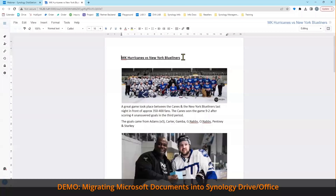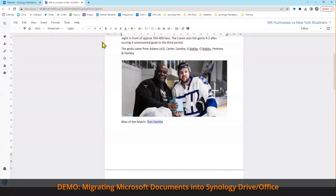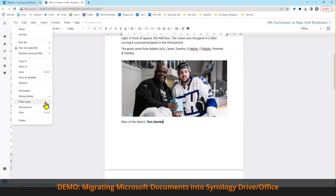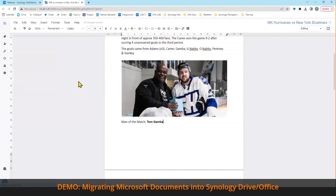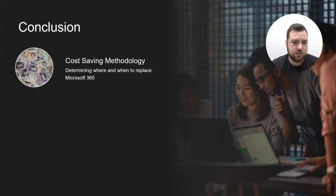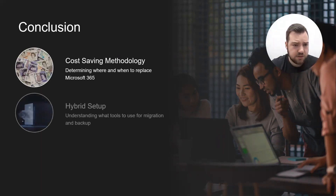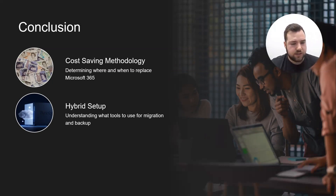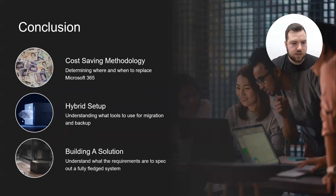We can now edit the file freely. Scrolling down, we highlight the manager's match entry — which happens to be me — to show we can make changes. We then demonstrate exporting as a Word document so you can share it externally with people not using Synology. To conclude: we've covered a cost-saving methodology for determining when and where to replace Microsoft 365, working with hybrid setups, understanding migration and backup tools, and building a fully specced solution based on your requirements.